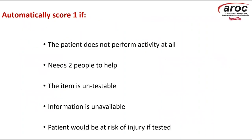A score of one is also automatically given if two people are required, if the item is untestable — for example, if there's nowhere to do laundry — or if the information is unavailable. Like scoring one in the FIRM, if the person is put at risk of injury, is untestable, or information is unavailable, the suggestion is to make a comment in the comments section on the data collection form explaining why, so that if there's a trend we can see what's happening with these outcome measures.